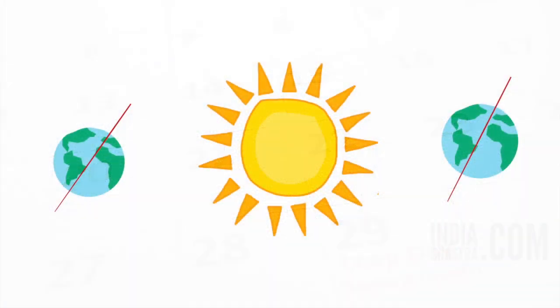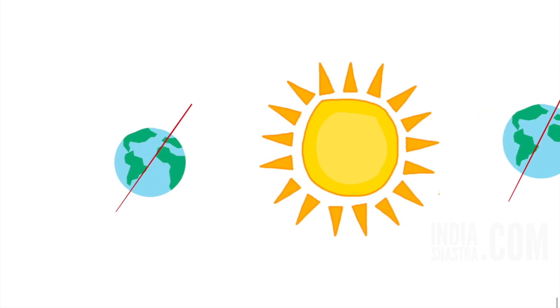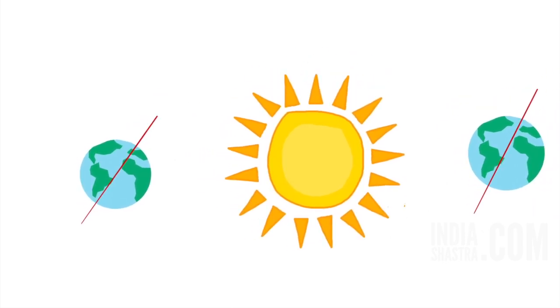Seasons are because of change in the position of the Earth around the Sun. If you are inclined towards Sun, you will get maximum amount of heat and there is summer. When North Pole is inclined towards Sun, it is summer in the Northern Hemisphere.